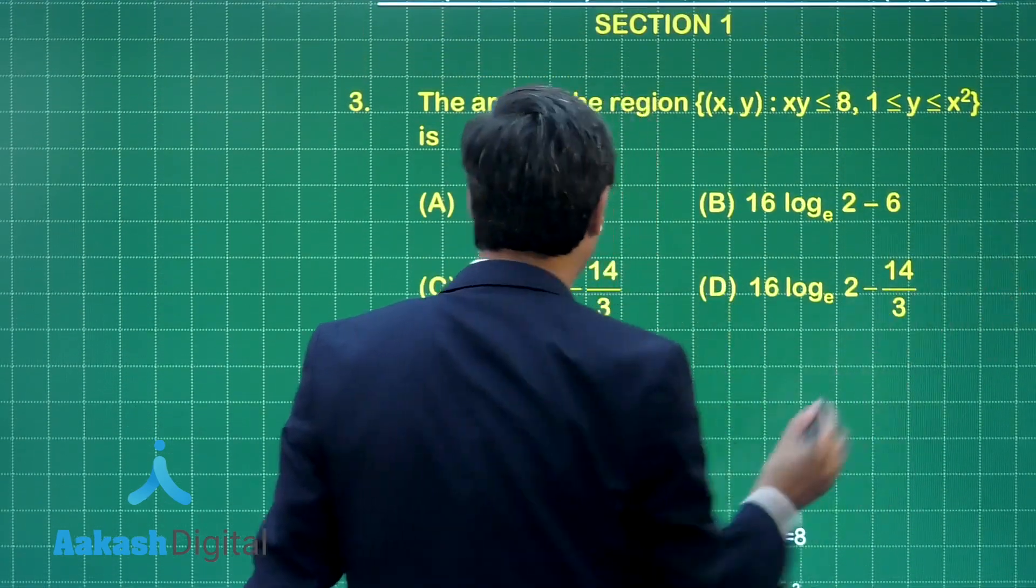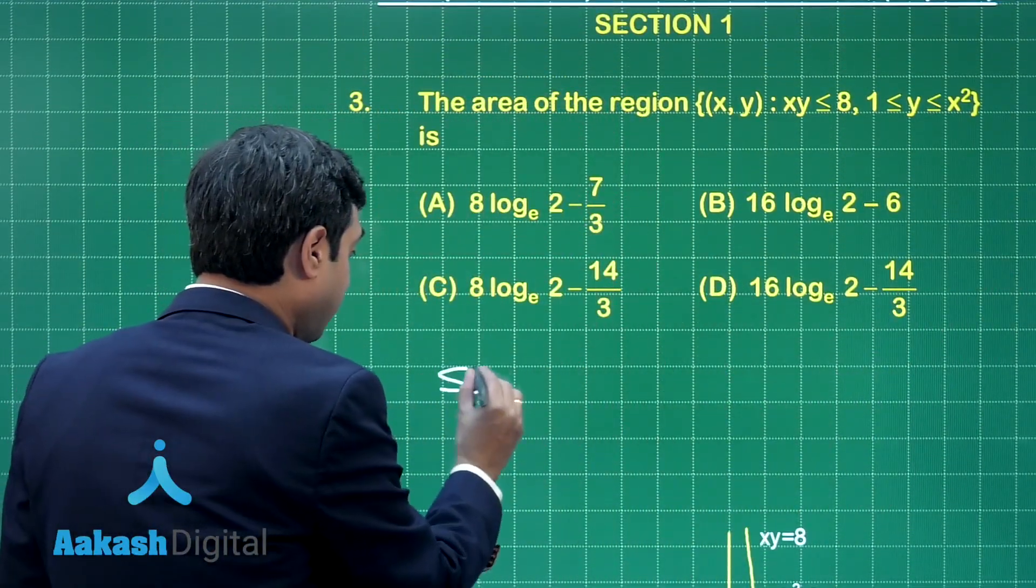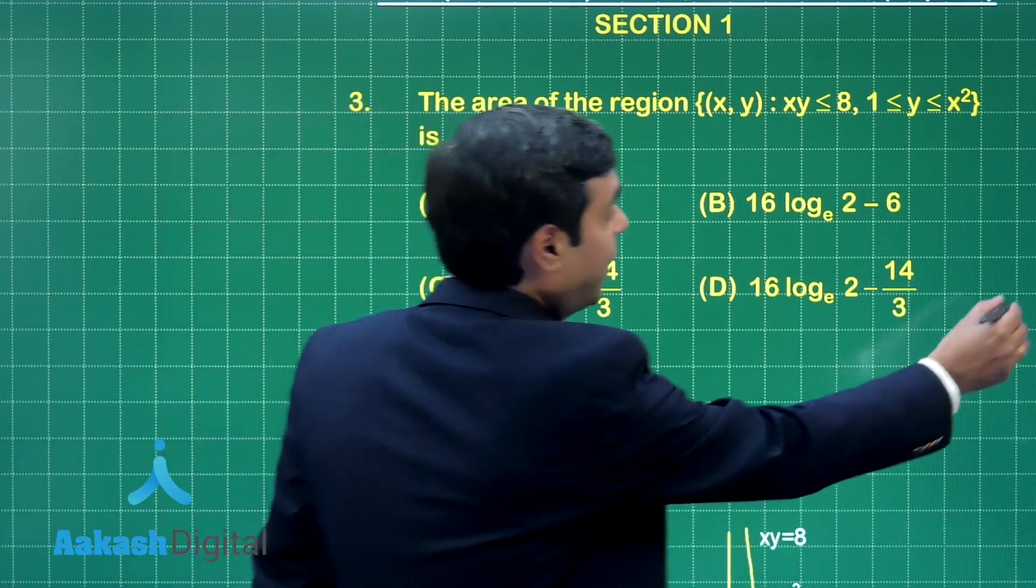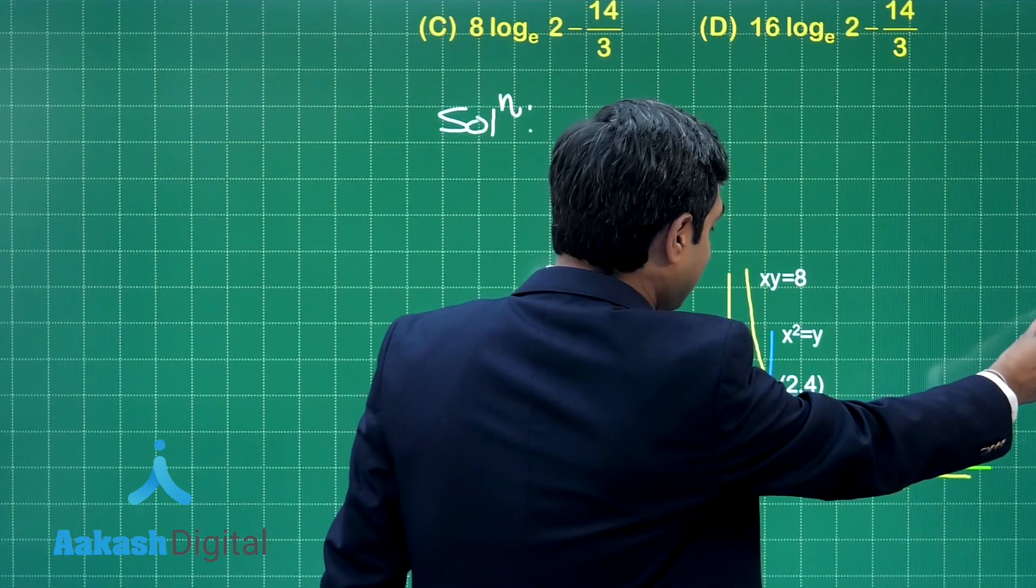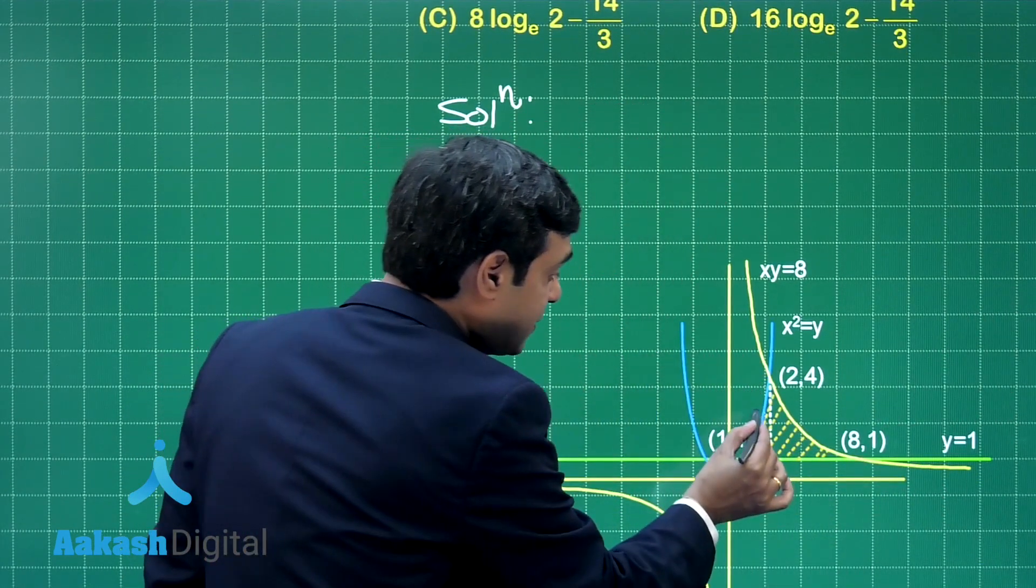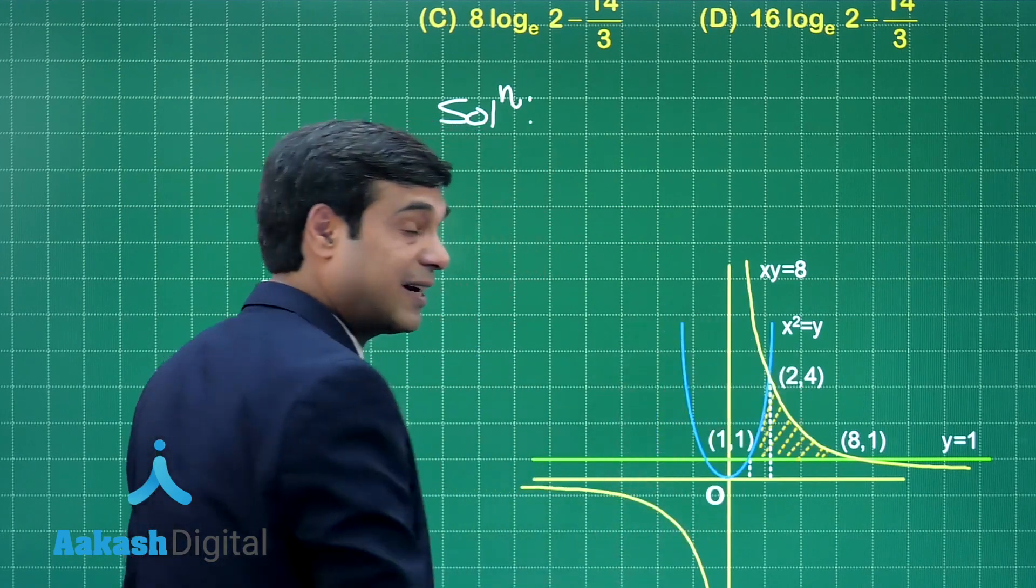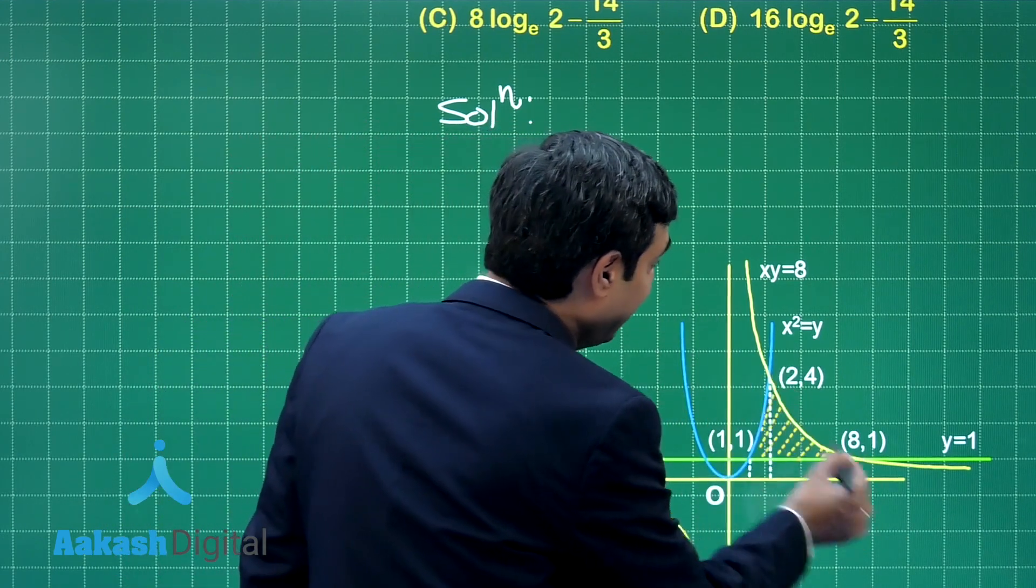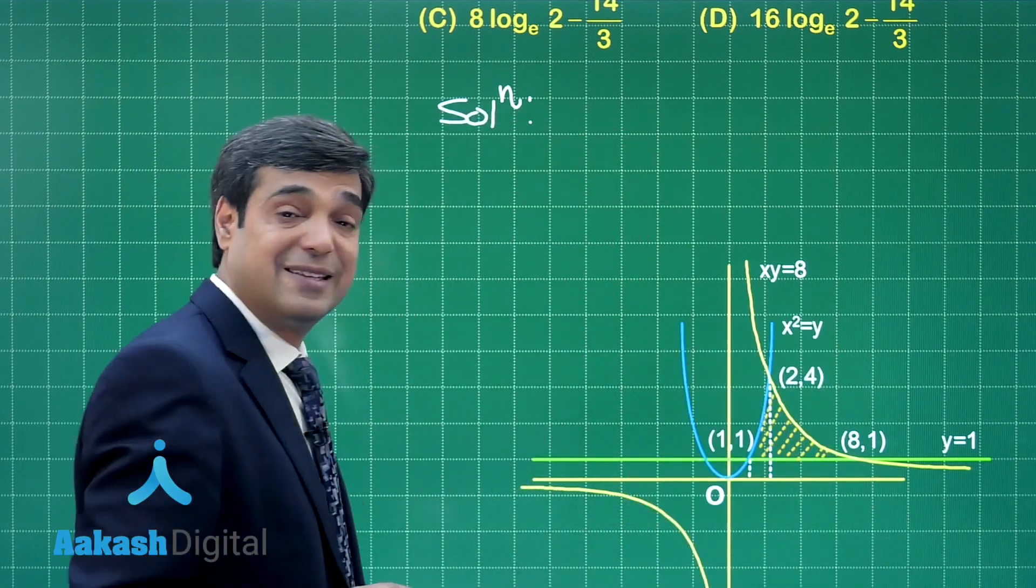So, let us talk about the curves first. Given to me hyperbola and the parabola and the line. If we talk about the intersections, we can see that these two are intersecting at 1, 1. This parabola and hyperbola intersecting at 2, 4 by solving the two. And when you put y equals 1 in this hyperbola, you can see x is 8.